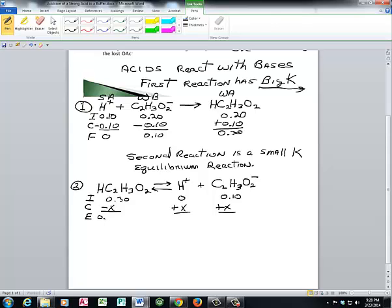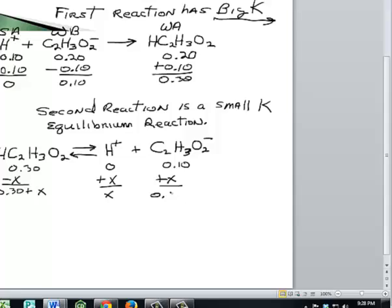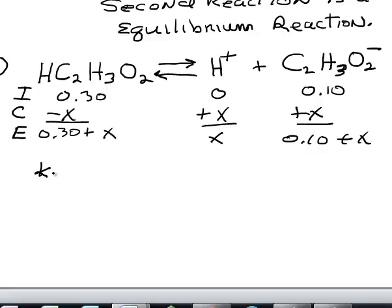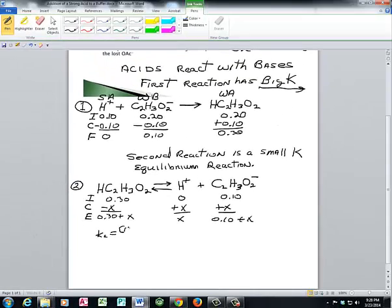And then finally adding the initial concentration and the change of x's, we wind up with 0.30 plus x and x and 0.10 plus x for the acetate ion. We go ahead and we construct our Ka expression. Our Ka expression is equal to the hydrogen ion concentration times the acetate C₂H₃O₂⁻ concentration divided by our acetic acid HC₂H₃O₂ concentration.